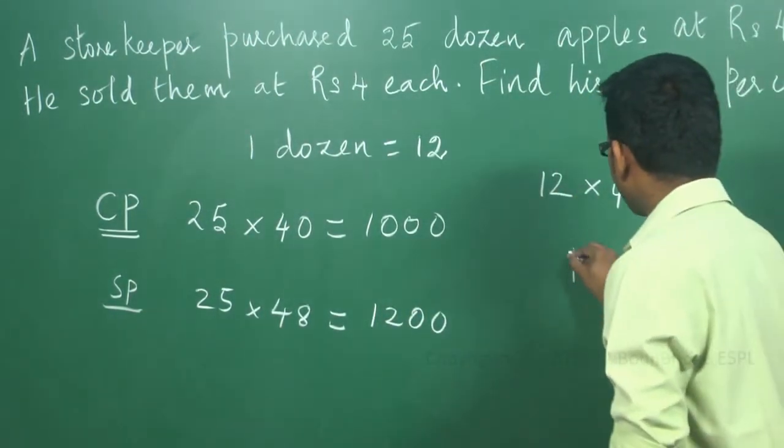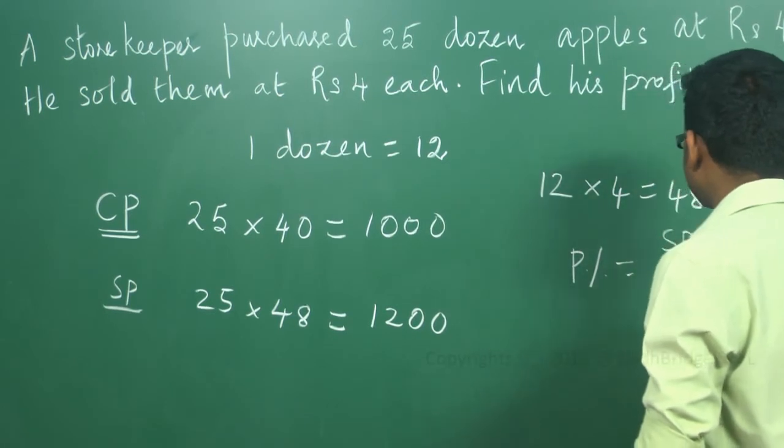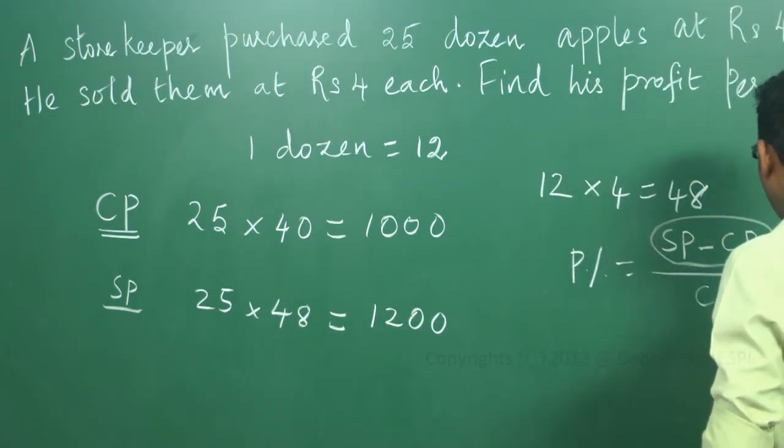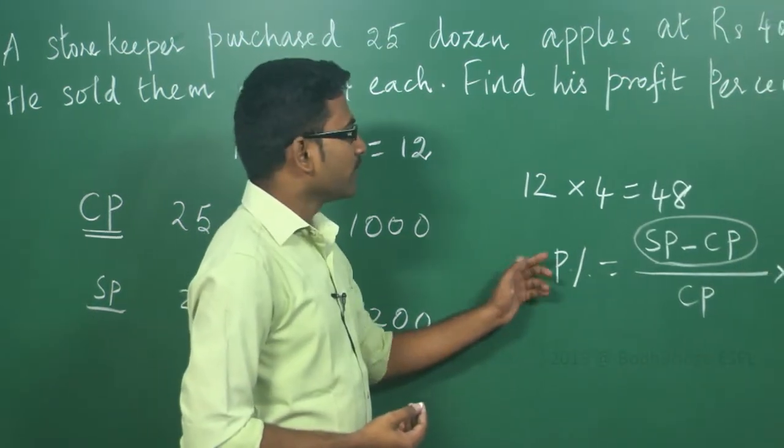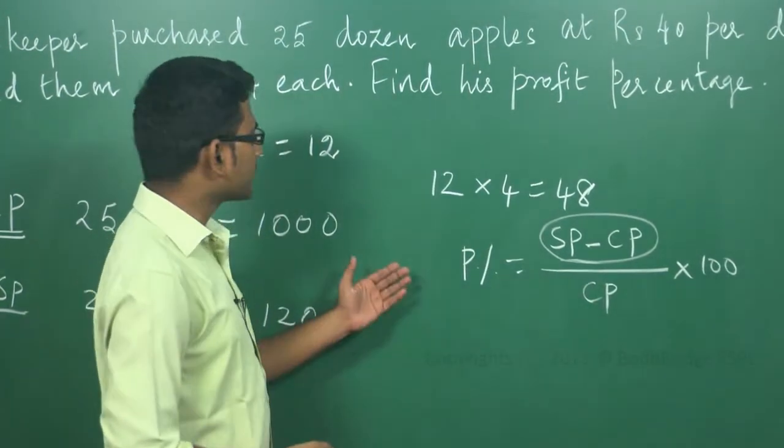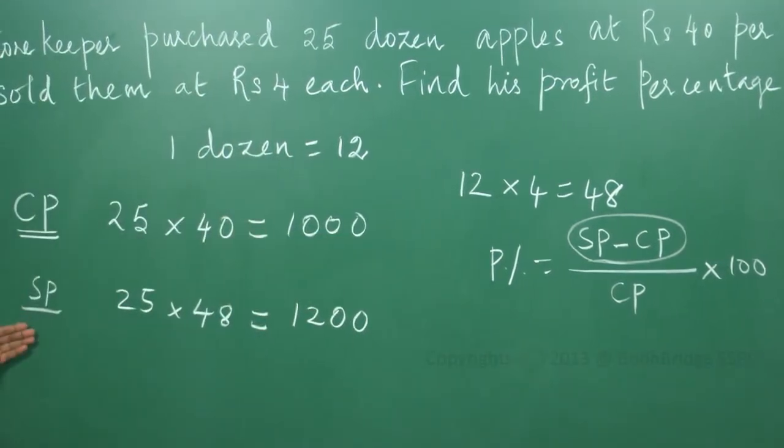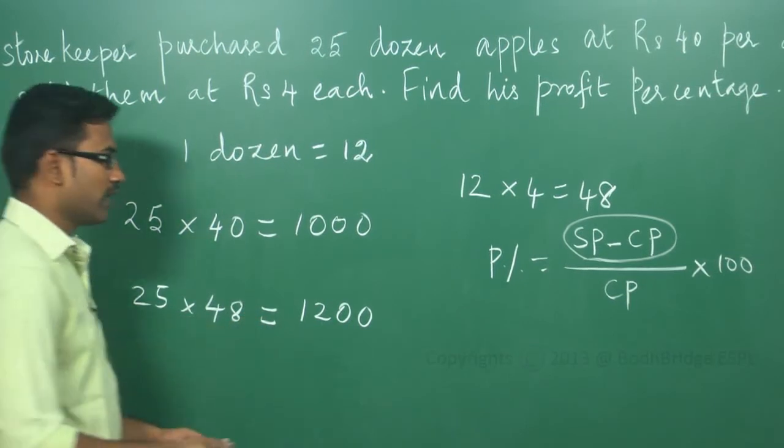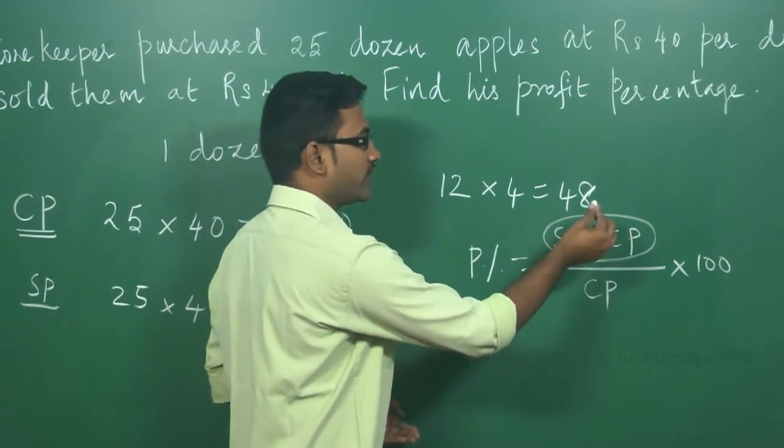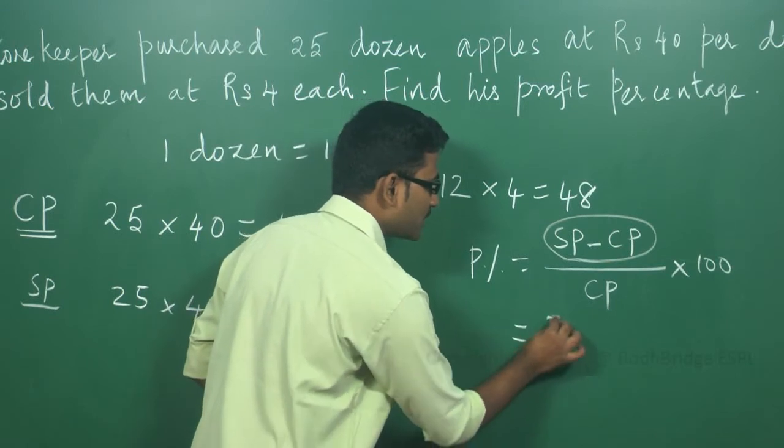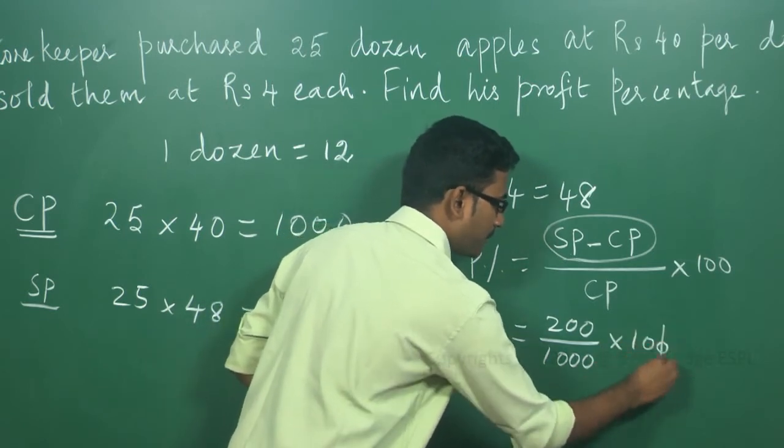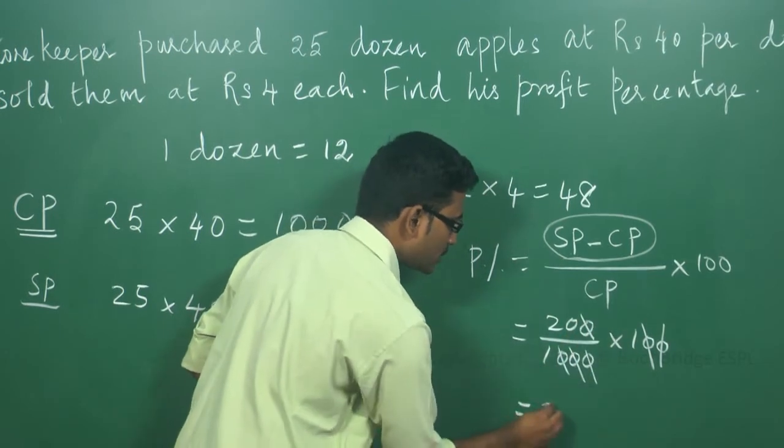You have to apply that formula. Profit percentage is equal to SP minus CP—that is the profit amount—divided by CP into 100. Profit percentage is given by selling price minus cost price divided by cost price into 100. This is the formula. Now, we have to substitute the cost price and selling price, whatever we had calculated. That is 1000 and 1200. So, subtracting, 1200 minus 1000 equals 200. Cost price is 1000 into 100. Simplifying, it is 20 percentage.